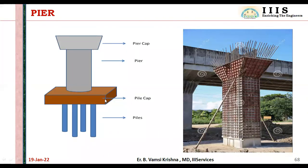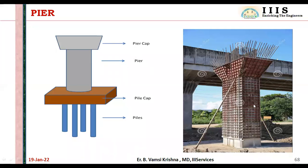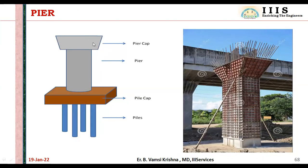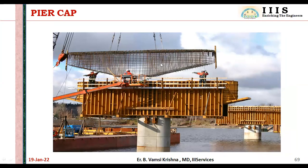Next is the pier. This is the pile, this is the pile cap, and this is the pier. The pier is considered a substructure because when a bridge is built over a river, the pier will be submerged at high flood levels. We consider piers and pier caps as substructure. The pier cap is provided above the pier, and bearings are provided over the pier cap.